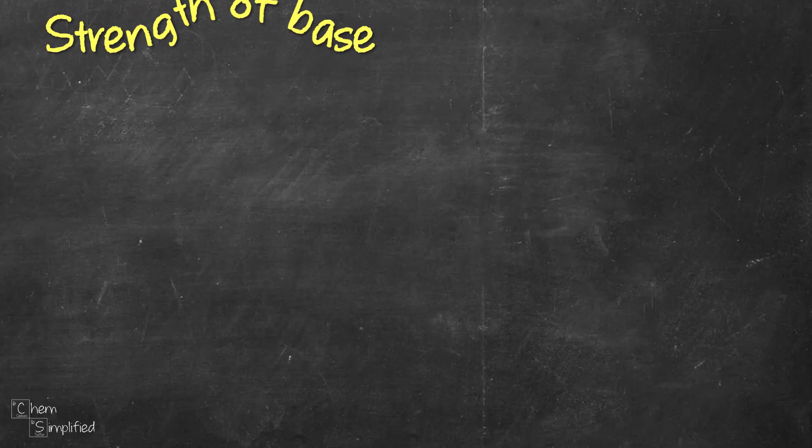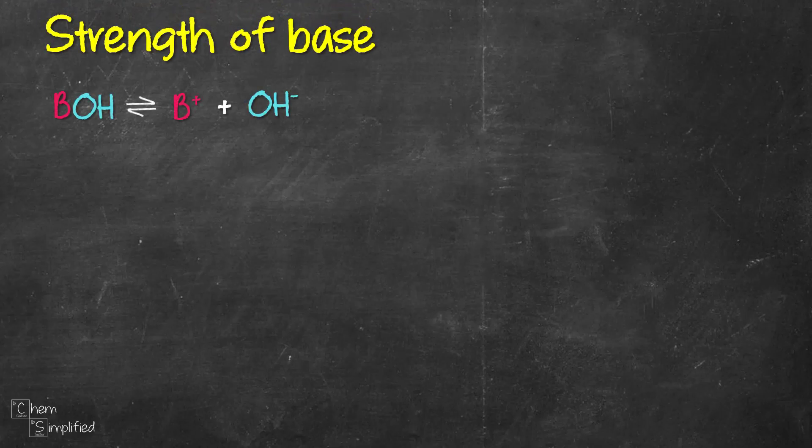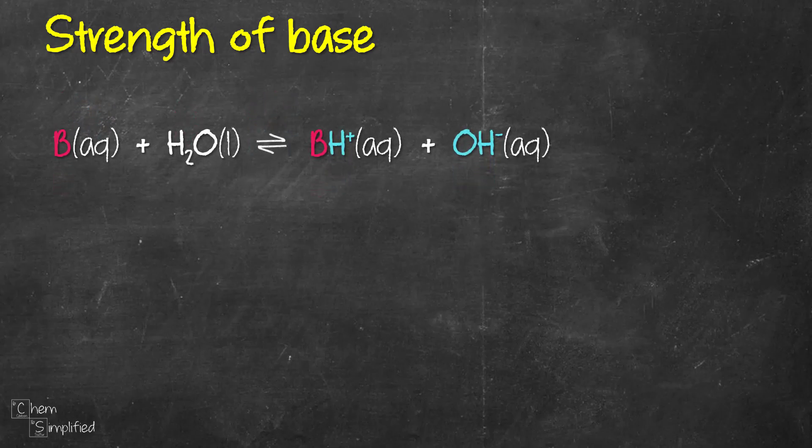We can determine the strength of a base through calculations. There is a limitation with Arrhenius theory because bases like ammonia (NH3) don't have an OH component. So we use the Bronsted-Lowry redefinition instead, where base B is added to water producing BH+ and OH-. The base accepts a proton (H+) from water, forming BH+ as the conjugate acid, while water donates the proton and becomes OH-, the conjugate base. There is a separate video on Arrhenius and Bronsted-Lowry theory linked in the description.